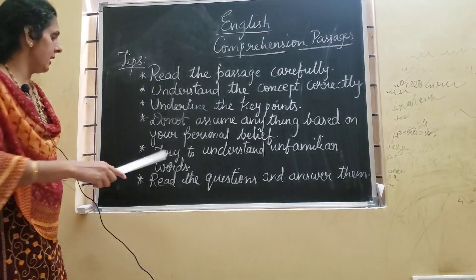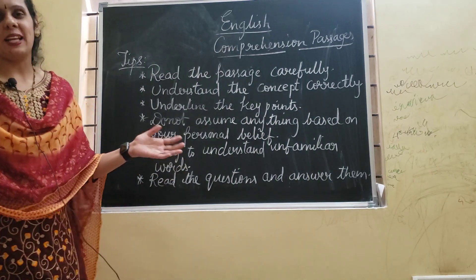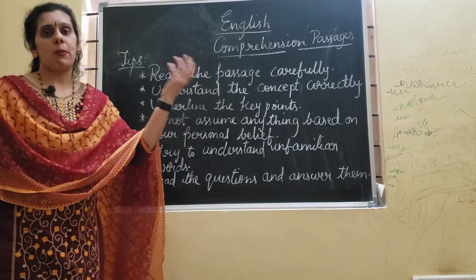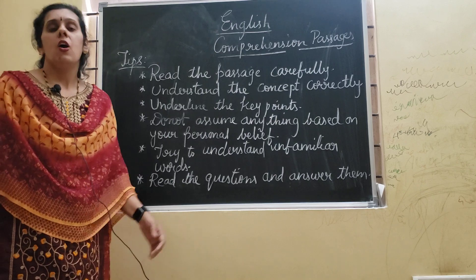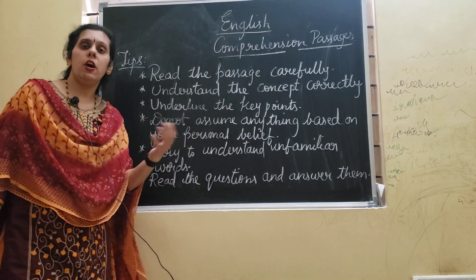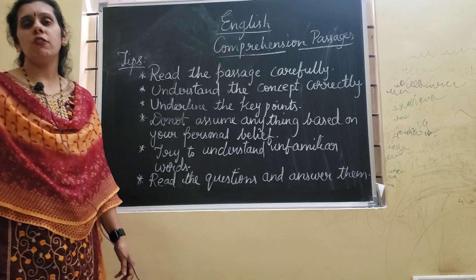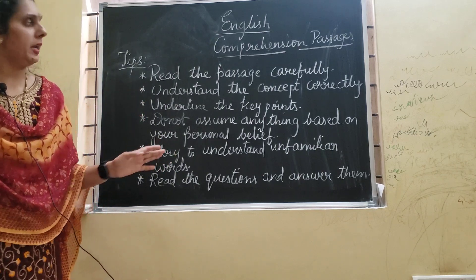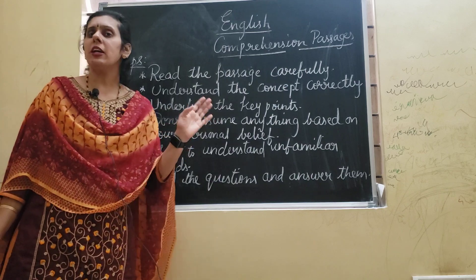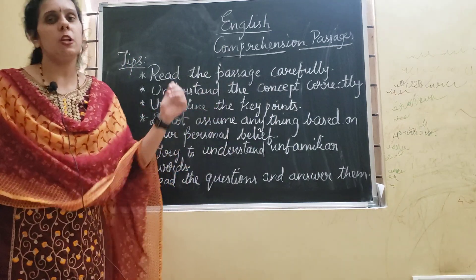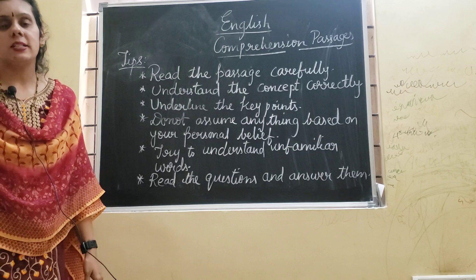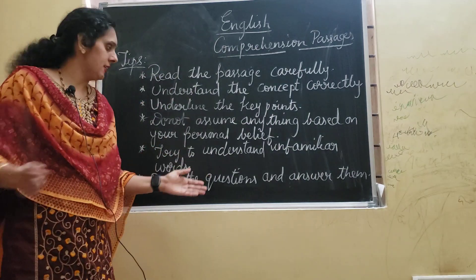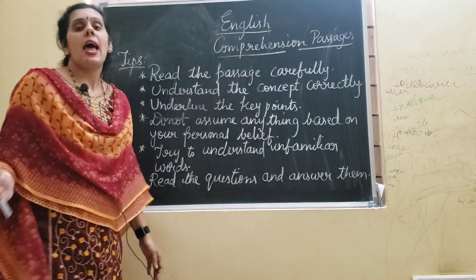Next, at the end they may ask — as a fifth question or similar — to give an appropriate title for the passage, or to write your own conclusion. These are tricky questions. Keep these tricky questions for last, because if they ask you to give a title, you will only be able to write it after you understand the concept of the passage. After you understand everything, then you can read the questions and answer them.